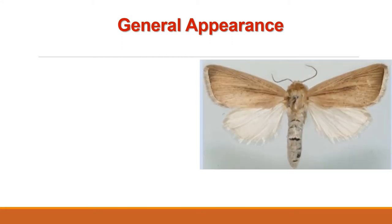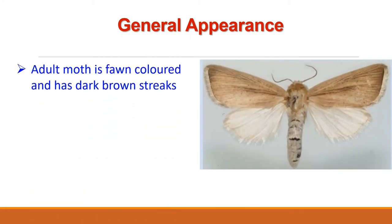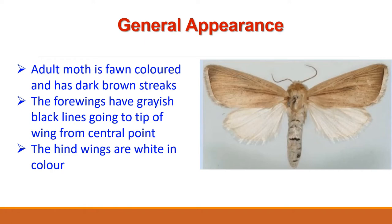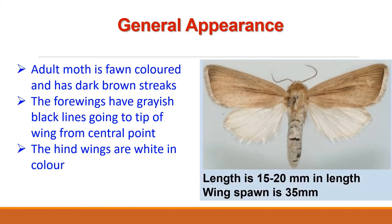As far as general appearance is concerned, the adult moth is 15 to 20 mm in length and has a stout body. It has dark straw or light brown color with typical dark brown streaks. Each forewing bears greyish-black lines extending up to the tip of the wing from the central point. The hind wings are white in color and it has a total wingspan of 35 mm.